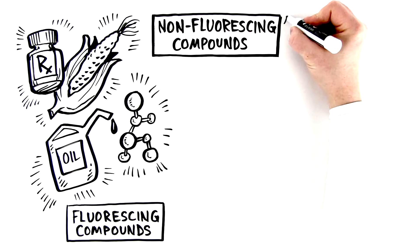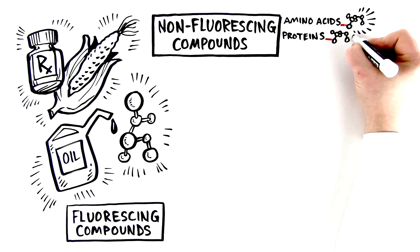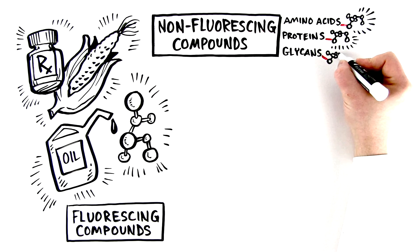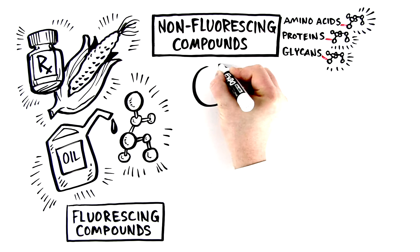Non-UV active compounds like amino acids, proteins, and glycans, which are invisible to a UV and fluorescence detector, are typically labeled with these fluorescence tags.